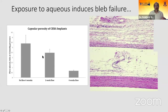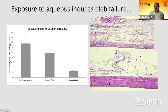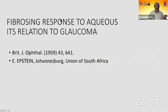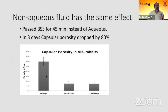In our experimental setup we noticed something similar. We implanted a device and connected it to the anterior chamber after four weeks. Histologically, implants not connected to the anterior chamber had a thin, porous capsule, whereas implants through which aqueous was flowing had a thick capsule with reduced porosity. Interestingly, when we replaced aqueous with BSS, we got the same effect — fluid flow itself drove capsule thickening.